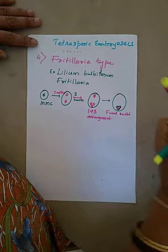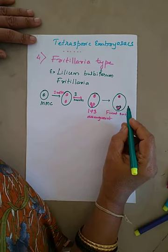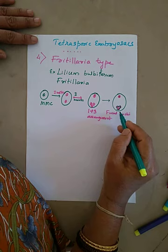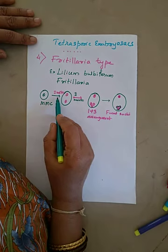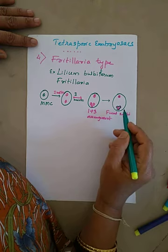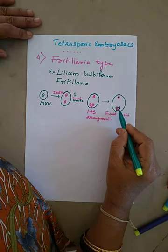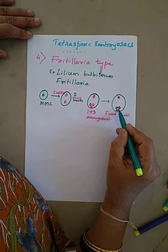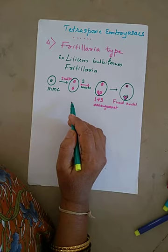The three nuclei at the chalazal end later fuse. So you will find the fusion of the three chalazal nuclei, while towards the micropylar end there remains the single nucleus. This is the speciality observed in the fritillaria type during the first and second meiotic divisions.